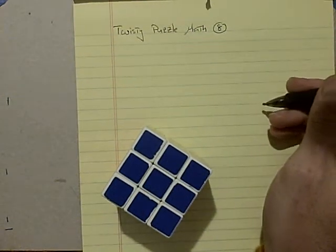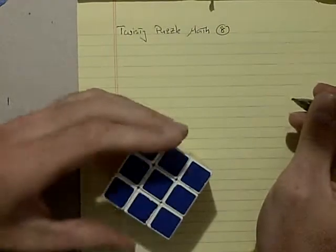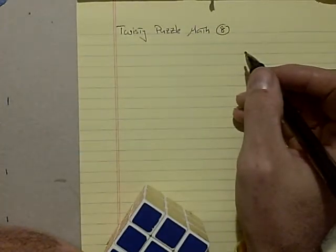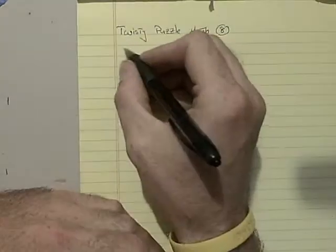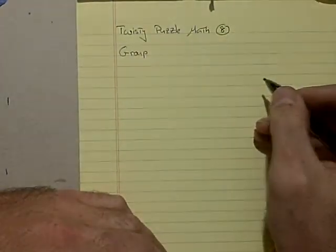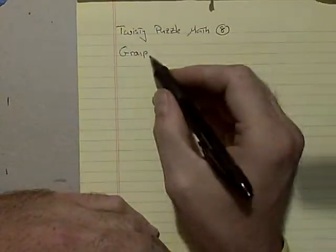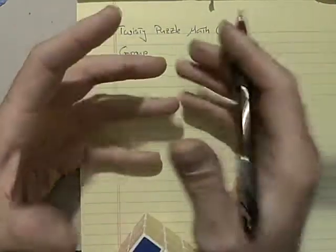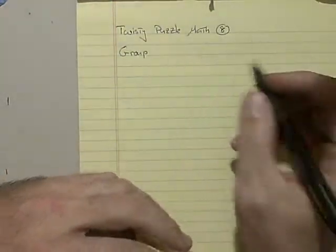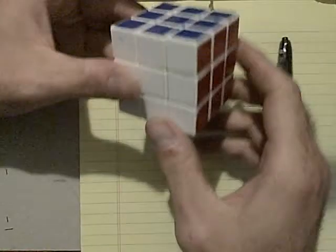This is the eighth video of Twisty Puzzle Math, and I'd like to talk a little bit about some groups today. So we've been talking about the mathematical object, a group, which is a collection of elements you can combine in some fashion. When you combine them, you get something else still in the group.